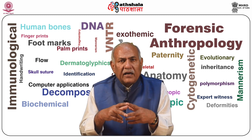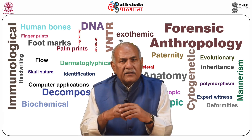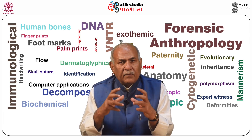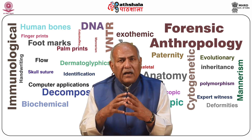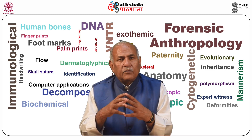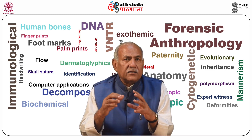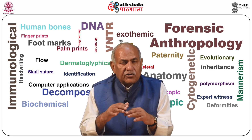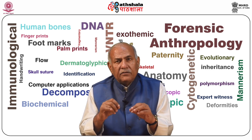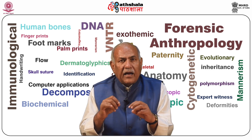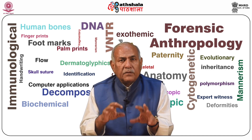Dermal ridge differentiation takes place in the third and fourth month of fetal life. By the end of the fourth month, the ridges and their arrangements are in their complete and permanent form. From this time onwards until death, there is no morphological change either in the detailed structure of the ridges or in the patterns formed by them. The fact that each individual's ridge configurations are unique has been greatly utilized as a means of personal identification, especially by law enforcement officials.